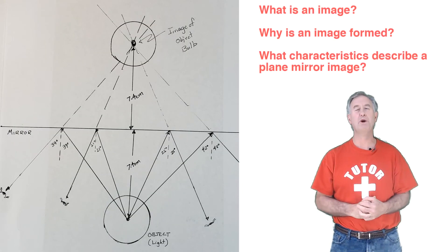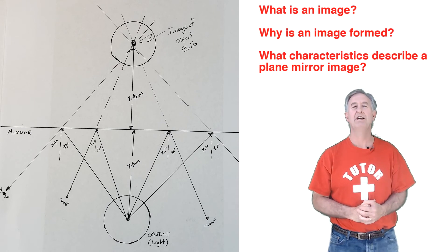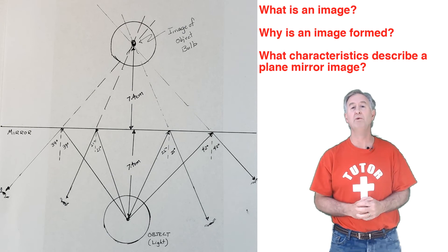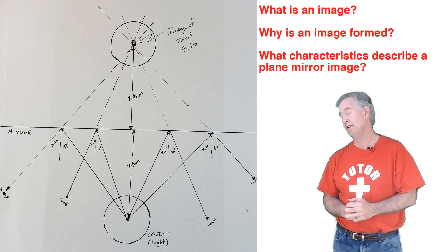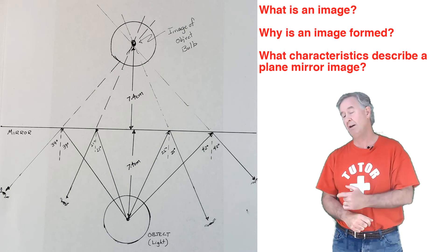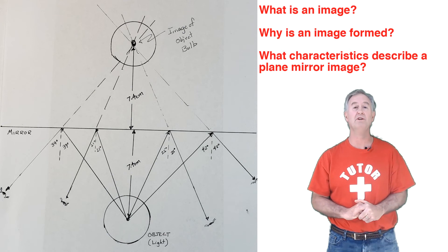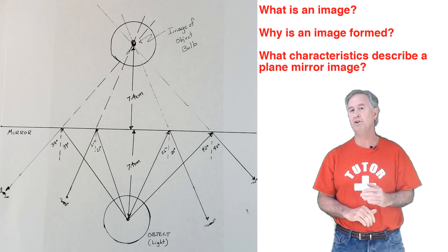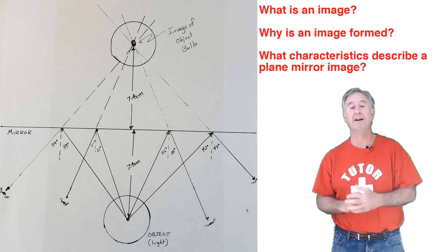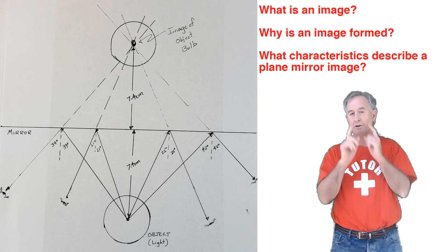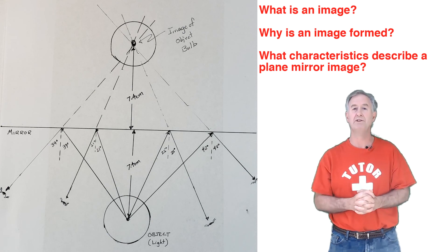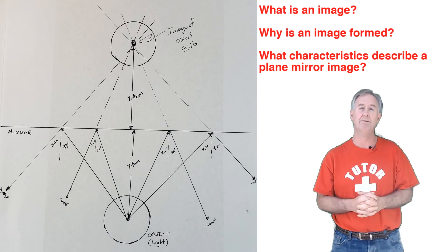So now we're back to those original three questions. An image is a replica of the object located behind the mirror at the location where it would seem to every observer as though the reflected light is coming from. It's formed because light from our object approaches the mirror and reflects according to the law of reflection. If you take each of the reflected rays and trace them backwards, they intersect at the image location, so two eyes can sight backwards along two different lines to the same location in space and perceive the presence of an image.